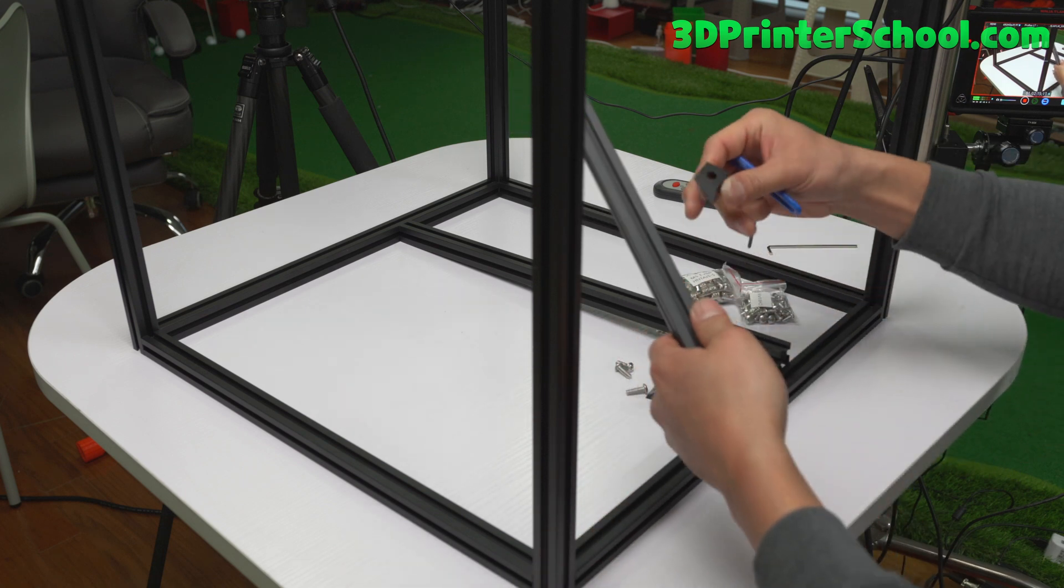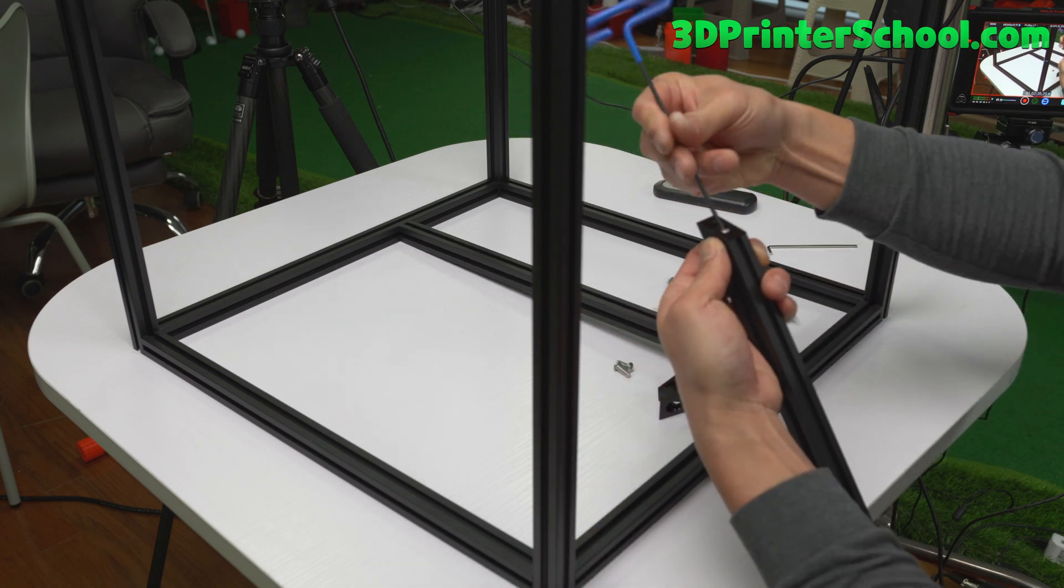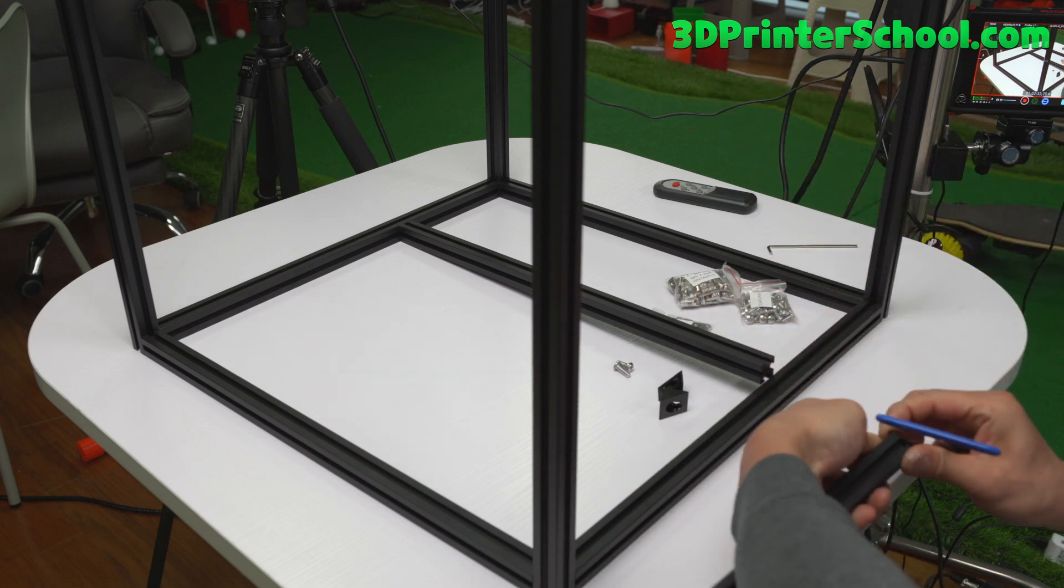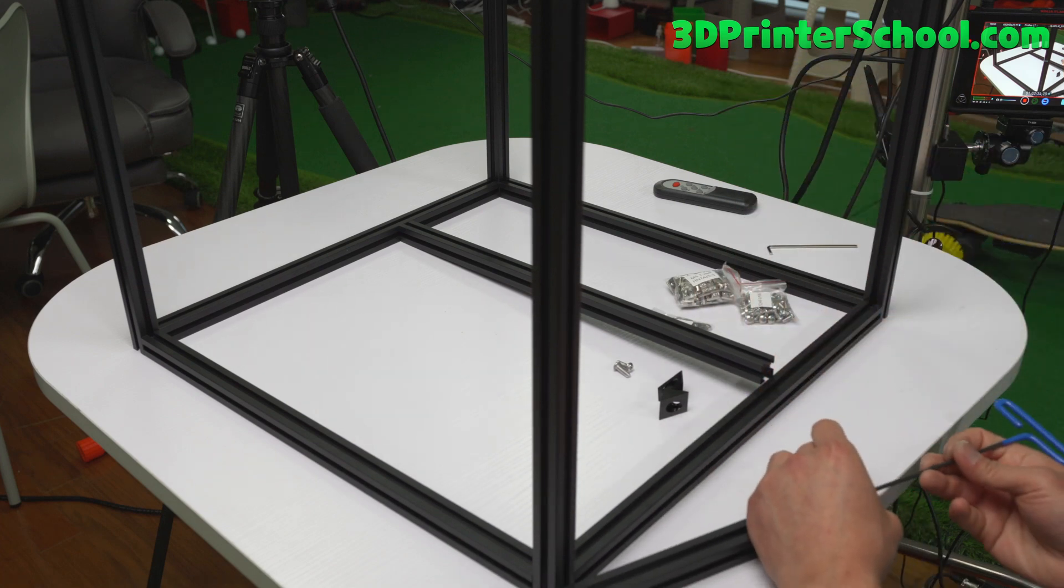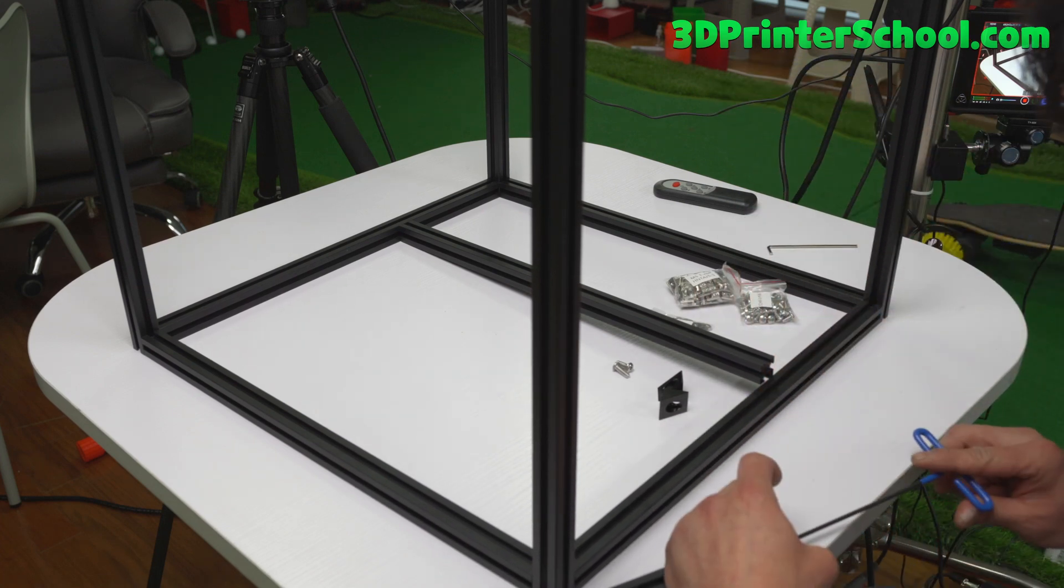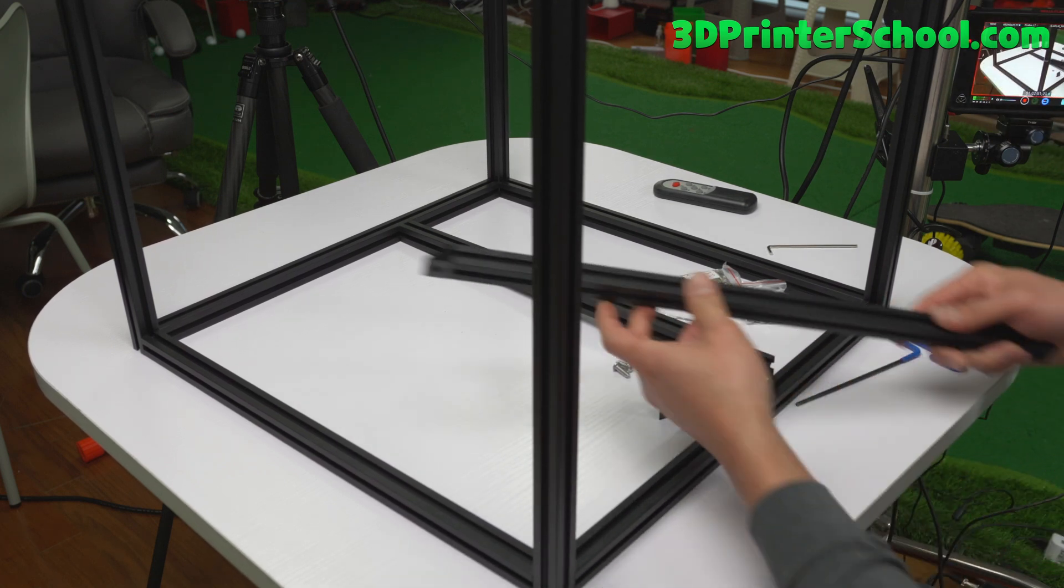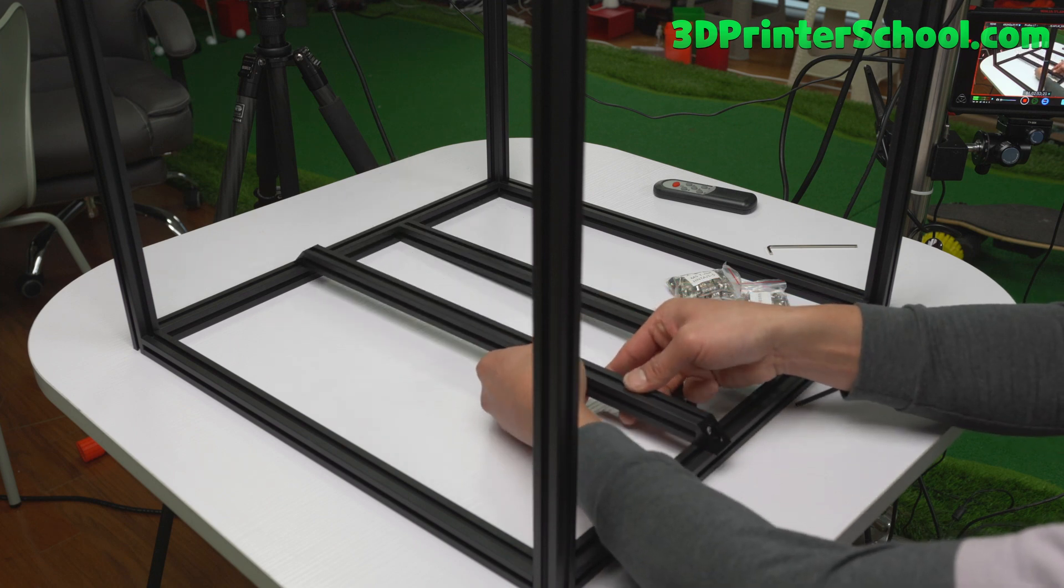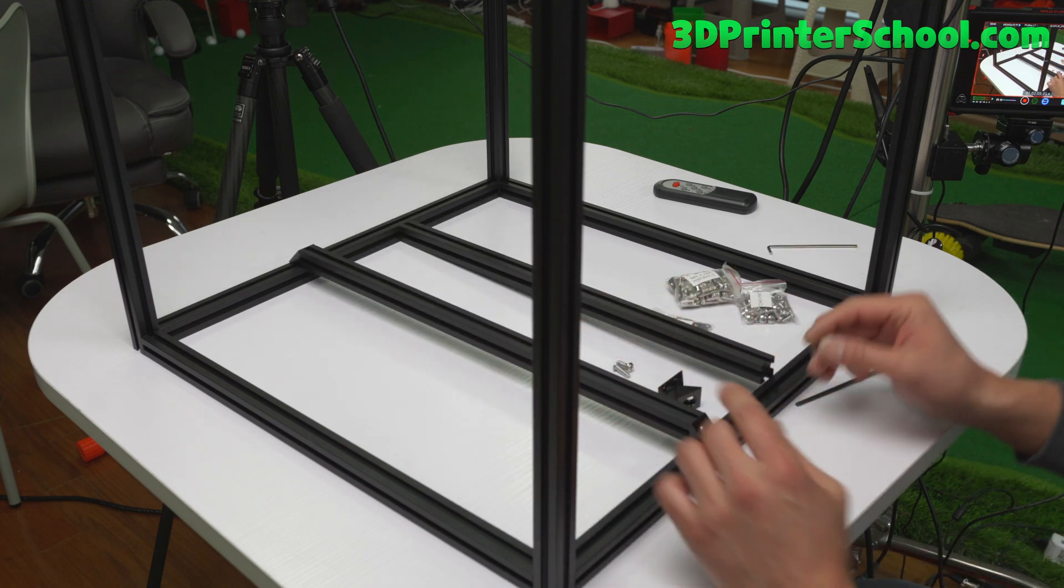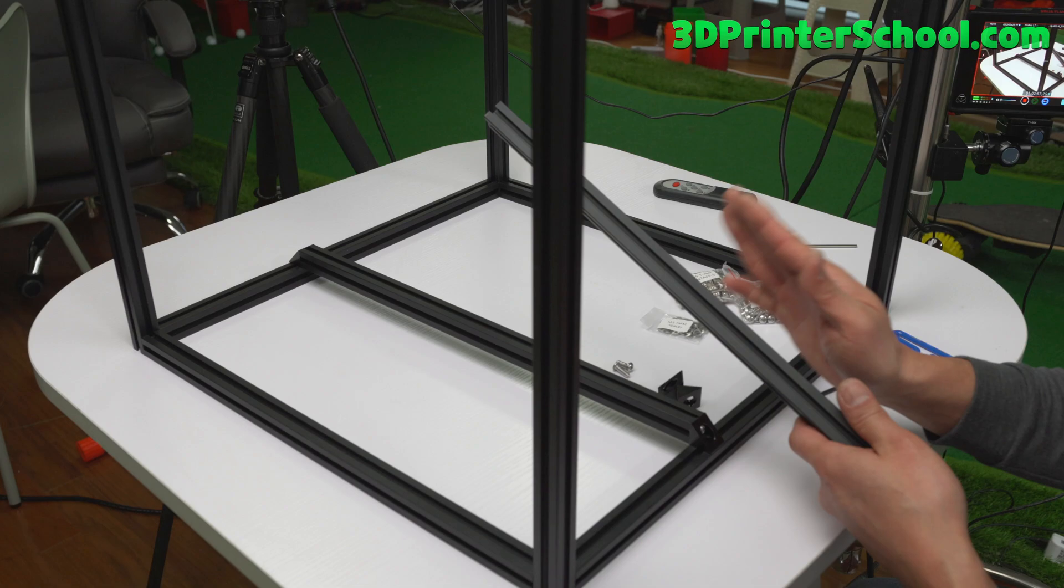Go ahead and connect the other end. Try to square this up on your table also. When you're done, you should have a piece like this that goes right over like that. Do the same thing for this other guy.